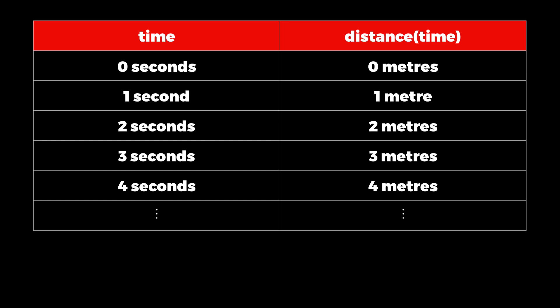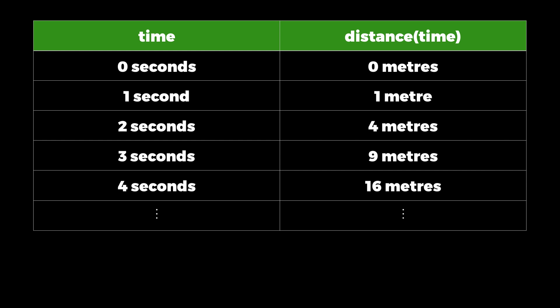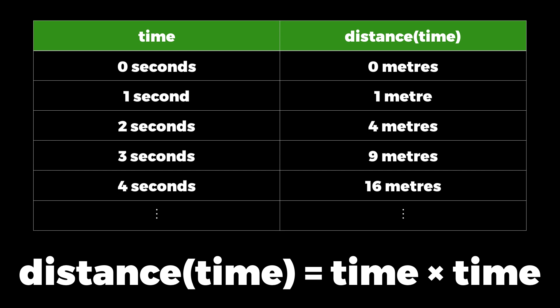In this case we can see that the distance is actually equal to how many seconds it's been travelling for. After three seconds it's travelled three metres, for example. If we measure the green car's distance, it turns out it's the time multiplied by itself. After three seconds it's travelled nine metres.